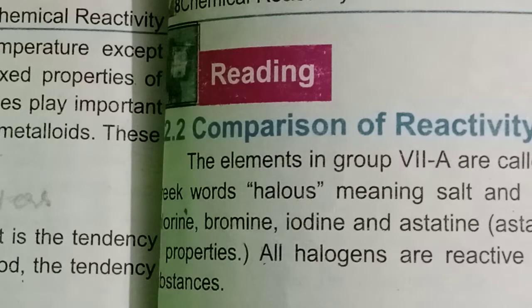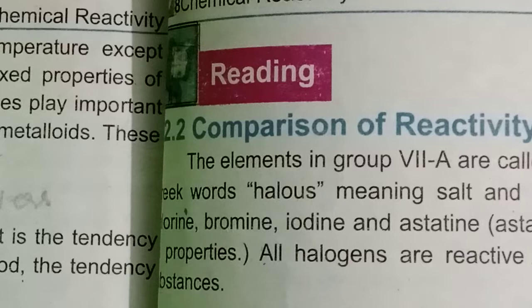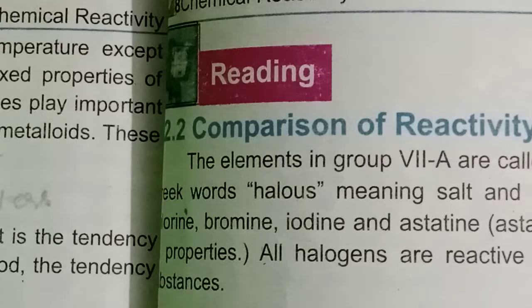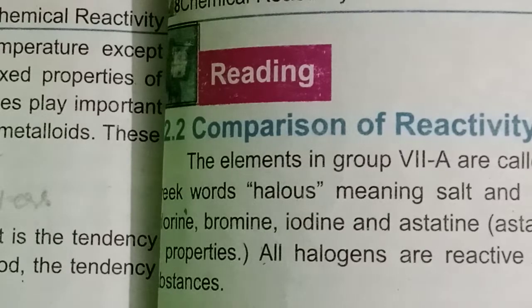Their name: the name halogen is derived from the Greek word 'halos', meaning salt, and 'gen' meaning forming. So halogens means salt-forming.